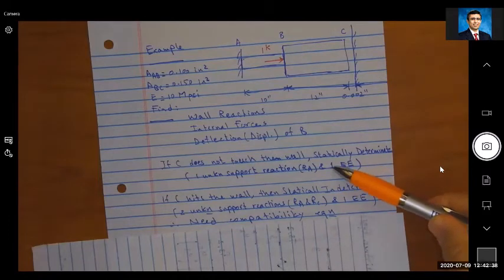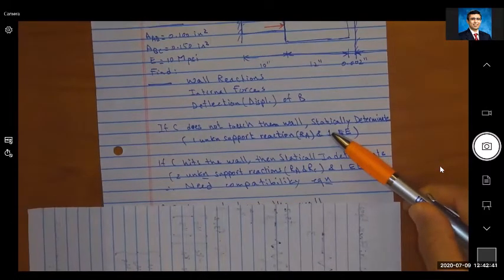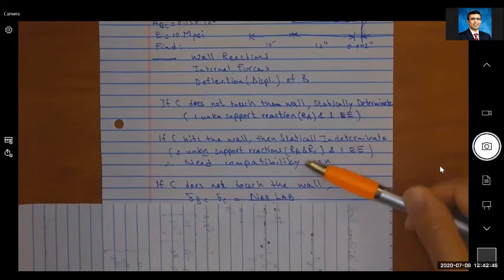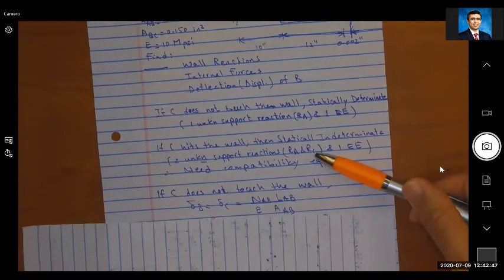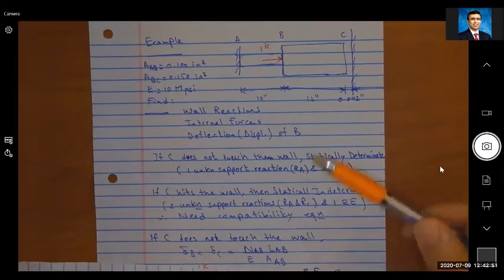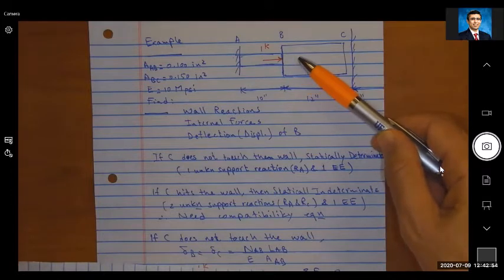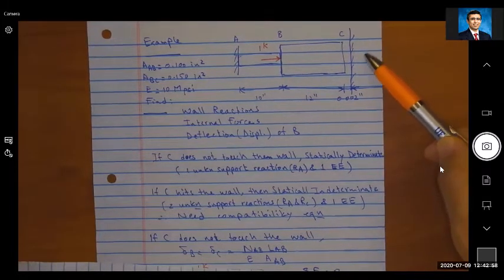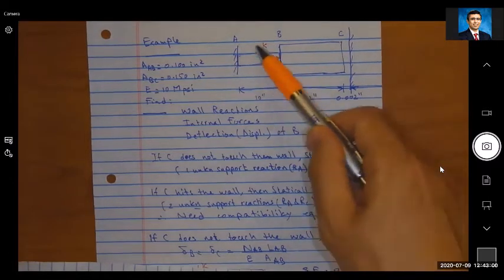Because we're going to have two unknown support reactions and we only have one equation of equilibrium. If it touches the wall, we're going to need a compatibility equation. So if C doesn't touch the wall, the first scenario, then basically however the distance B is going to move is going to be the same as C, and this is going to be equal to the elongation of AB.